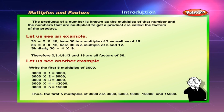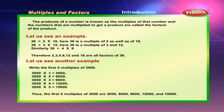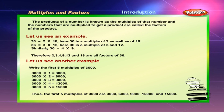36 equals 3 into 12, so 36 is a multiple of 3 and 12. Similarly, 36 equals 4 into 9. Therefore, 2, 3, 4, 9, 12, and 18 are all factors of 36.